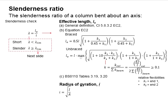This slide shows the checking of the slenderness ratio of a column bent about an axis. A column is considered a short column when its slenderness ratio is less than the slenderness limit. When it is more than or equal to the limit, it is considered slender.